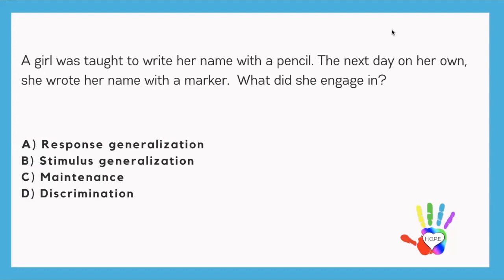Let's go through these questions. A girl was taught to write her name with a pencil. The next day on her own, she wrote her name with a marker. What did she engage in? Ask yourself that one simple question: did the response change? It did, because in order to use a marker you have to engage in a different behavior — you take the top off, and the marker looks and functions differently than a pencil which you have to sharpen. So these are two different behaviors. If you used the incorrect gauge of counting stimuli you would say stimulus generalization, but this is not stimulus generalization — this is response generalization.